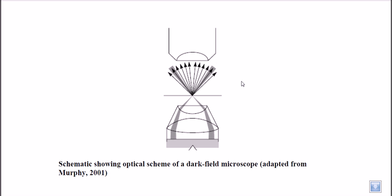In this picture both bright field and dark field microscopy have been illustrated. In bright field microscopy, the arrows shown in black represent the light source — a large amount of light passes through the specimen, which is why we need to stain the specimen for better contrast. In dark field microscopy, all of those black arrow beams are eliminated; only the ash-colored beams enter into the system.